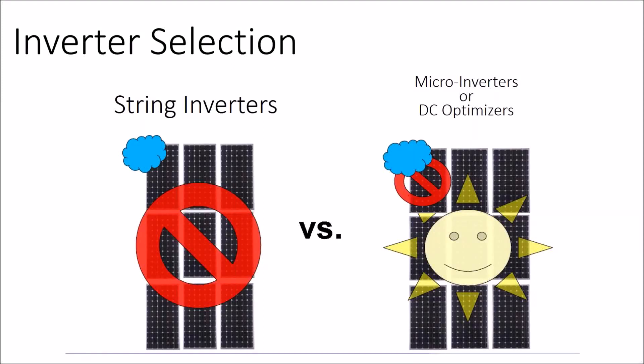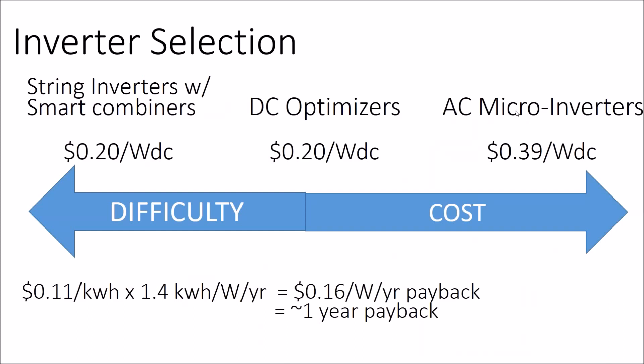So now we come down to the inverter choices. We know the default choice is DC optimizers, and the do-it-yourselfer or new-to-solar choice is microinverters. But what about string inverters by themselves? I have to say that currently my favorite is the string inverter with smart combiner.